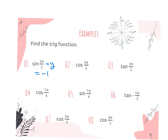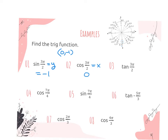Cosine — I'm going to look at the x of that ordered pair. Just for reference, the ordered pair is 0, negative 1. So the answer for cosine is just going to be 0. Now let's do tangent. Tangent, remember, is y divided by x. So my y is negative 1, my x is 0. Remember when the 0 is in the denominator? This one is undefined.